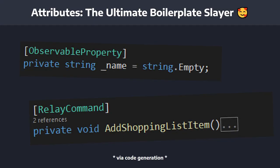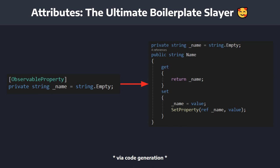Finally, the MVVM Toolkit provides some really helpful attributes. We can use the ObservableProperty attribute to turn any field into a property that raises property change notification. This cuts down on a bunch of boilerplate — we no longer need snippets to write it all out ourselves, we can just use an attribute.